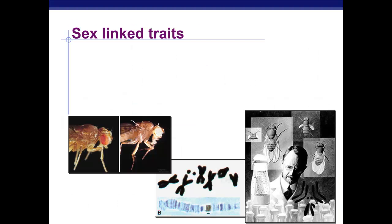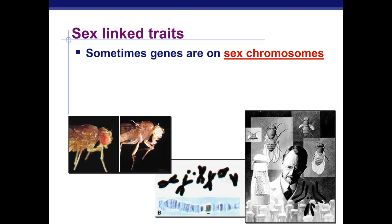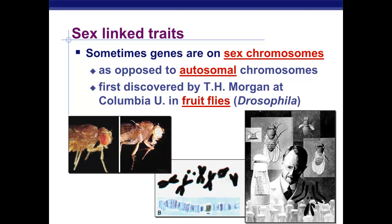So sex-linked traits, rather than being found on the autosomes like the majority of our genes, the genes are found on the sex chromosomes. Now these were first discovered by a guy named T.H. Morgan, who did research in the early 20th century, around the 1920s.